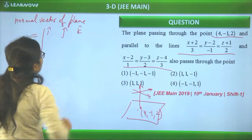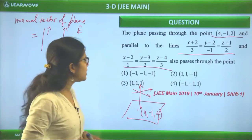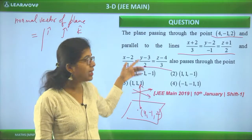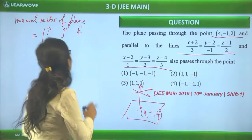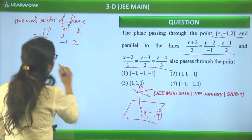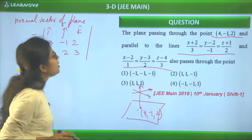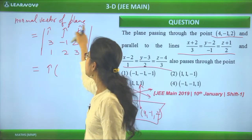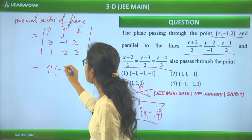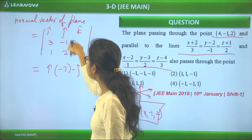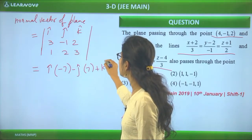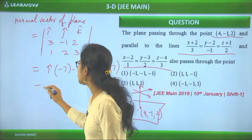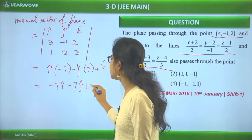We compute the cross product using the determinant with i, j, k. The direction ratios of the two lines are (3, -1, 2) and (1, 2, 3). Solving the determinant: for i we get (-3 - 4) = -7; for j we get -(9 - 2) = -7; for k we get (6 - (-1)) = 7. So the normal vector is (-7i - 7j + 7k), giving direction ratios (-7, -7, 7).